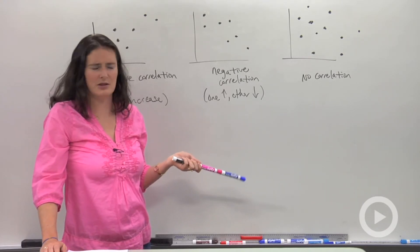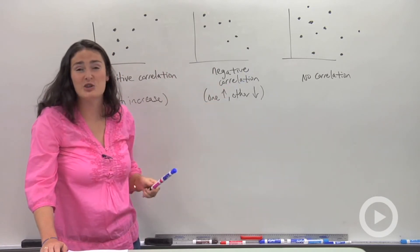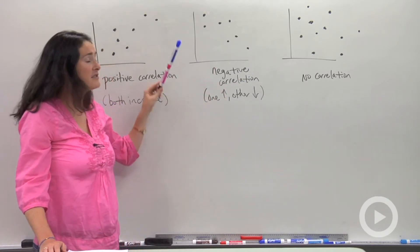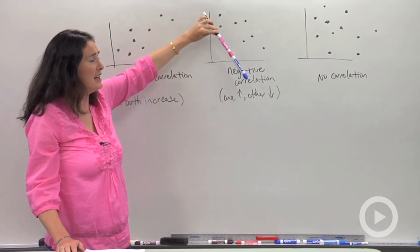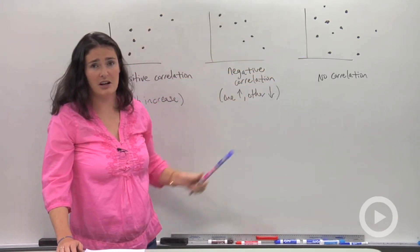Does that make sense? I hope so. Anyway, correlation has to do with how two variables are related to each other. Think of slope. It might be positive, negative, or no correlation at all.